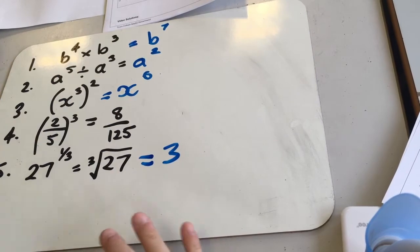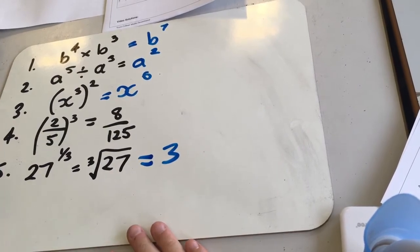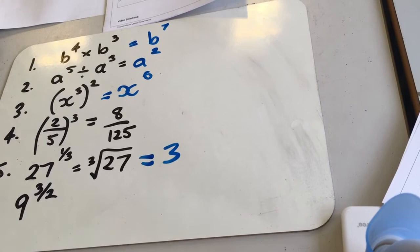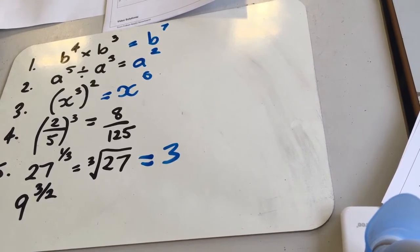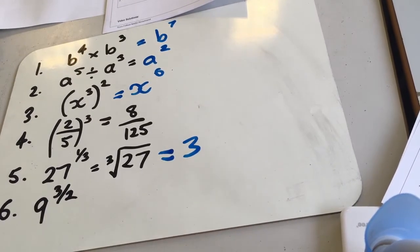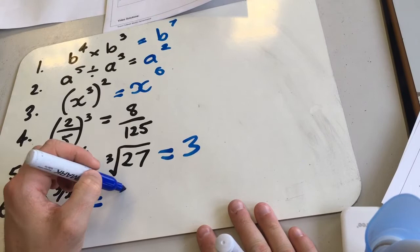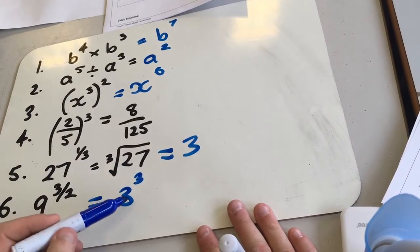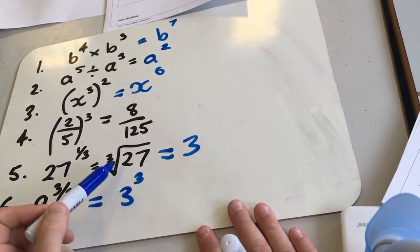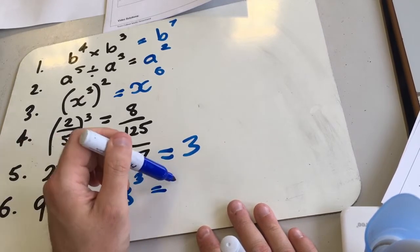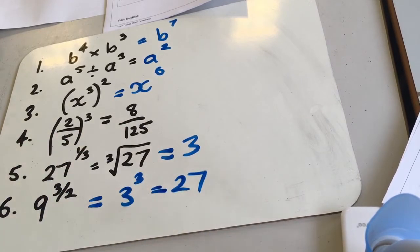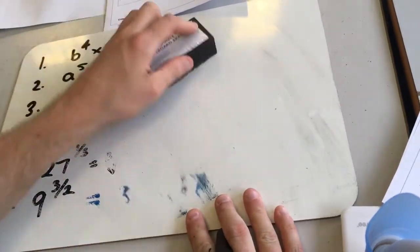Question 6, 9 to the power 3 over 2. So now we've got a fractional power with two different things going on. We can do them in either order, but one's always going to be easier. A lot easier to square root 9 than it is to cube it, so we'll square root the 9 first. The square root of 9 is 3, so we end up now with 3 cubed. And from the last question we learned about 3 cubed, we should know anyway as 27. So it links up to that one and we get 27.